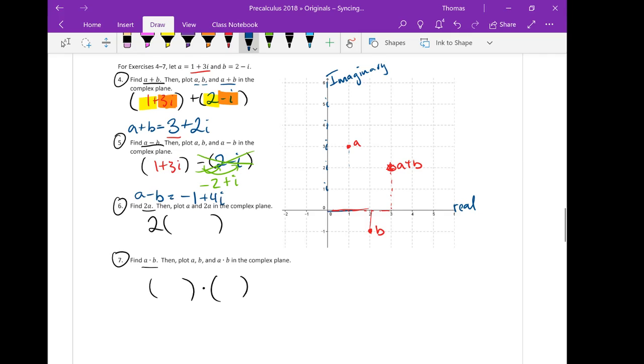Let's plot it. Negative 1 real part, positive 4i imaginary part. A minus b goes there. 2a is pretty quick: 1 plus 3i, distribute: 2 plus 6i, that's what I get. 2 plus 6i goes right up here. 2a.